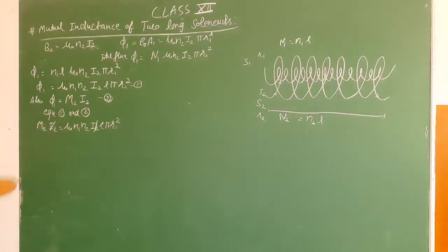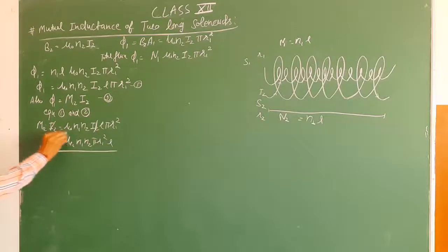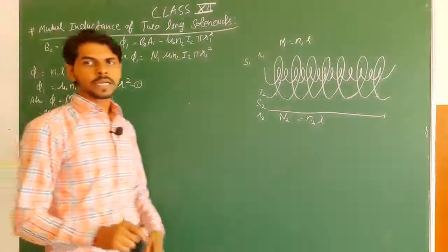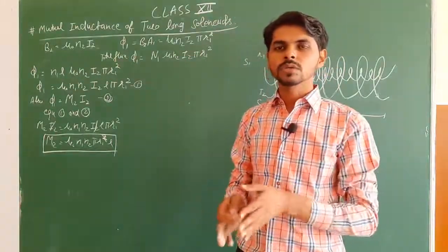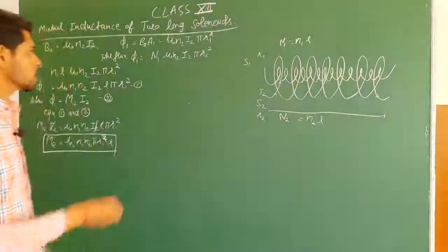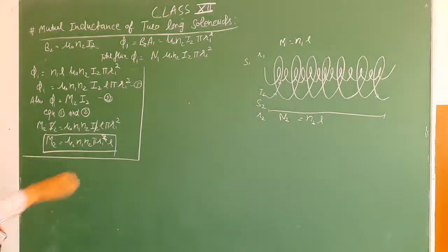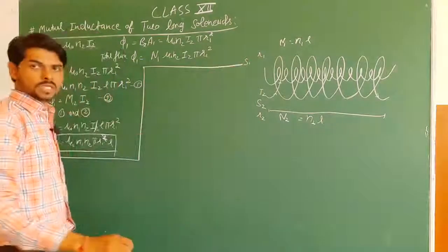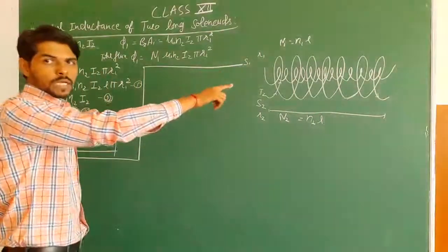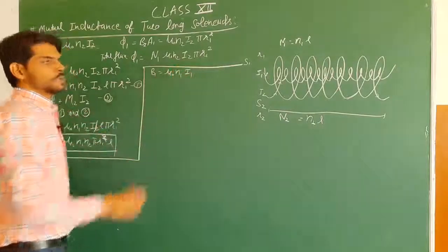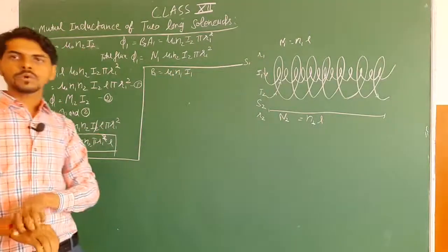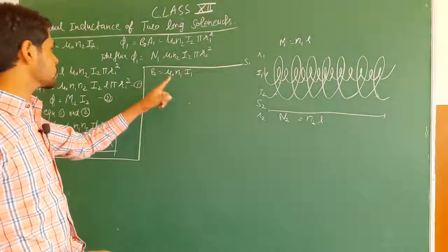This is the coefficient of mutual induction of coil 1 with respect to coil 2. Now to calculate M21 — mutual induction of coil 2 with respect to coil 1 — we pass current I1 in the first (inner) coil instead. The magnetic field of S1 is B1 = μ0·n1·I1.